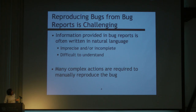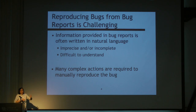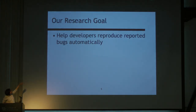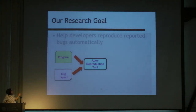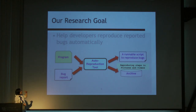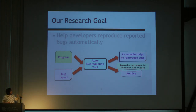However, reproducing bugs from bug reports is very challenging because the provided information is written in natural language. That language can be ambiguous and often incomplete. Even assuming that developers can perfectly understand the description, reproduction can still require developers to exercise many steps to reproduce the problem.